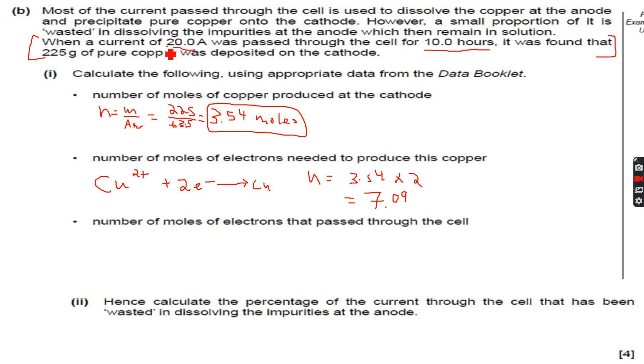We are given the current 20 amperes and the time 10 hours. So first we will calculate Q, which is the charge passed through the cell. So 20 into 10, but we have to convert the number of hours into seconds. So into 60 will give us minutes, and into 60 again will give us seconds. So this will be Q.